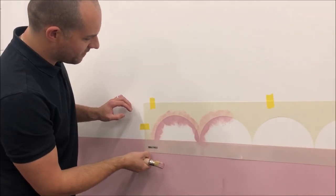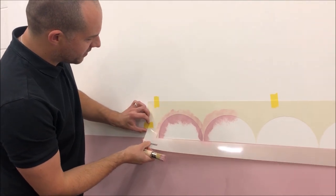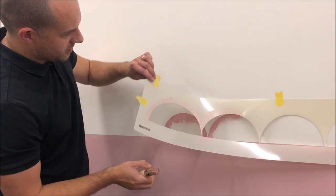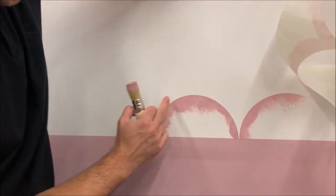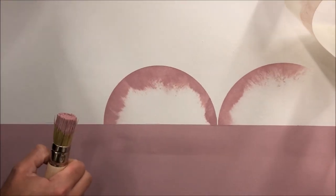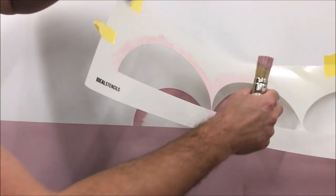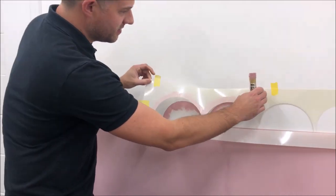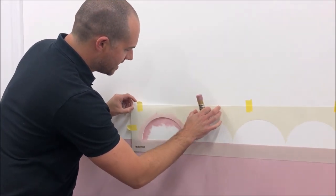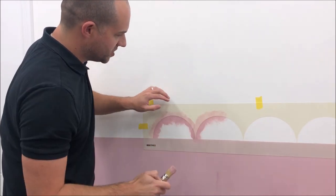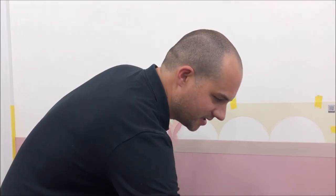If I lift the stencil now in this position, you'll see that we're getting nice crisp lines around the edges of the scallops. You can always put your stencil back into position then. It should just lay straight back down into the same position and allow you to carry on stenciling.